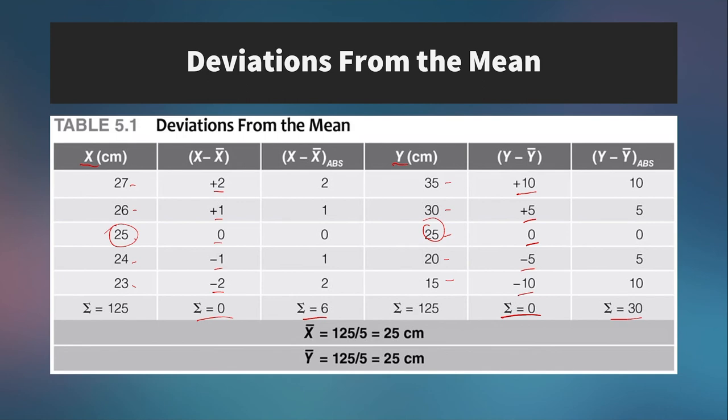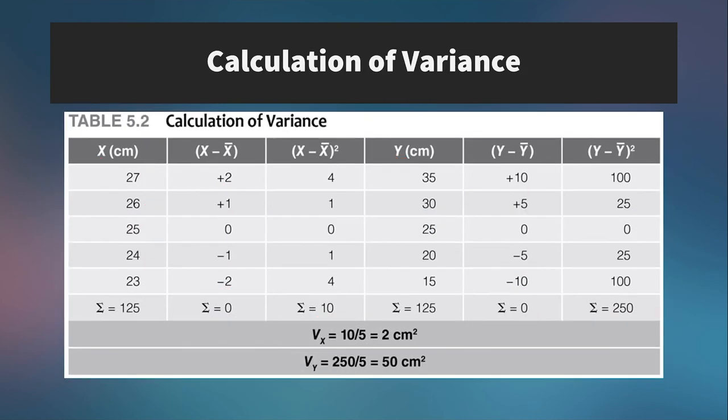Now when we're looking at this table, we notice that the mean for both of these is 25 centimeters. It's calculated right here. And so just the mean alone is not very descriptive of this data set. The mean alone is not very descriptive. We do have the absolute values of deviations from the mean, but what we actually want to calculate is variance.